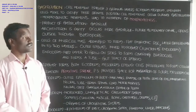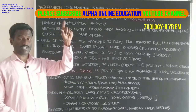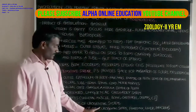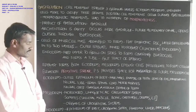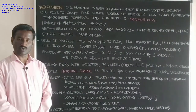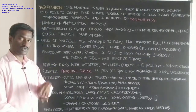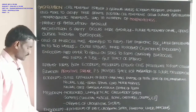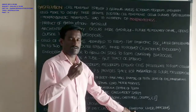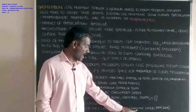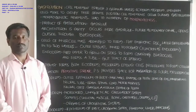Endoderm is the inner germinal layer. The epithelium of the respiratory tract and some parts of the urogenital system are produced from endoderm. The pharynx — the anterior or primitive part of the gut — and the liver and pancreas are also produced from the endoderm.